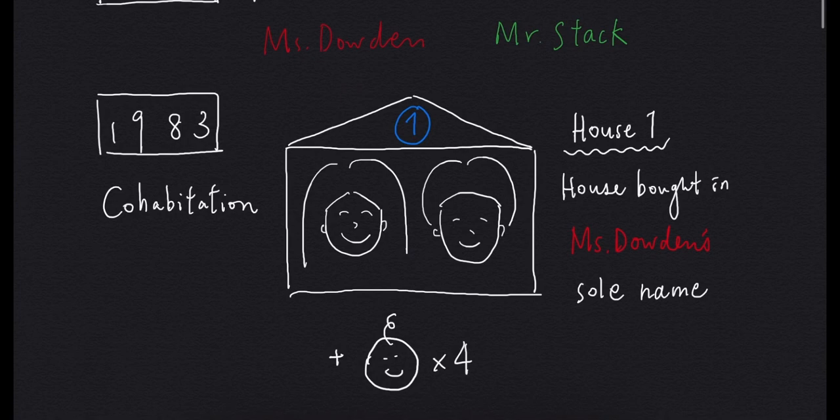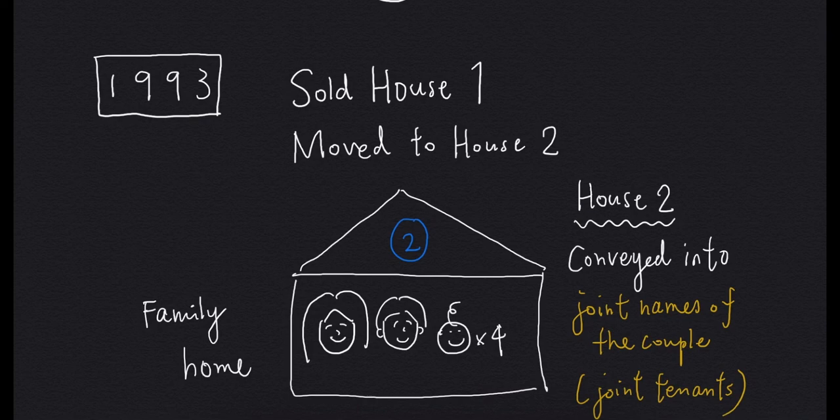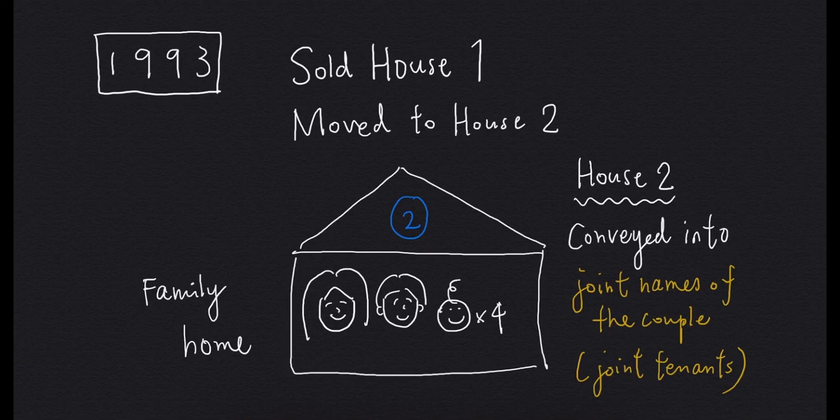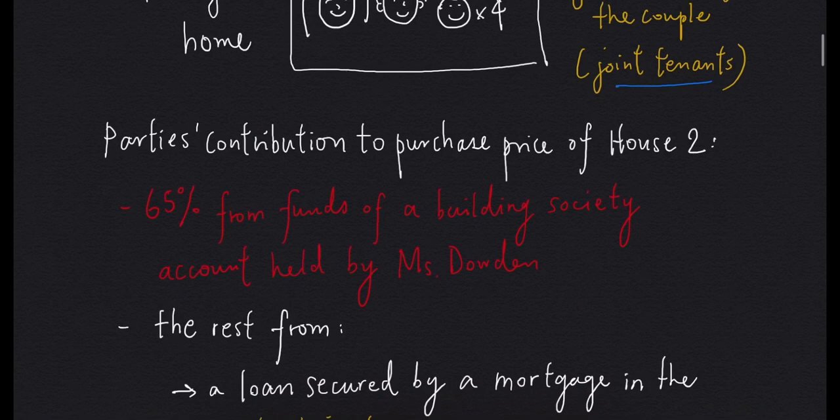In 1983, they started cohabitation. Mr. Stagg moved into a house which had been bought in Ms. Dalton's name. They had four children. In 1993, they decided to sell the old house and moved into a new one. For the new house, it was conveyed into the joint names of the couple, so Mr. Stagg and Ms. Dalton were legal joint tenants.